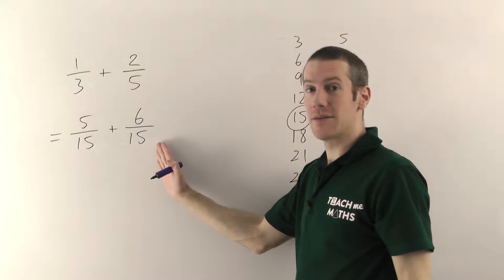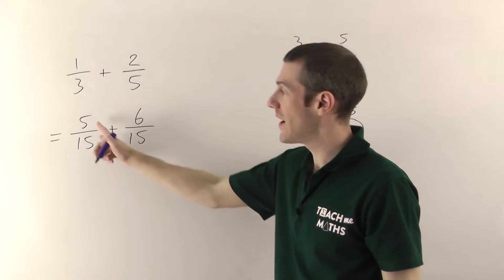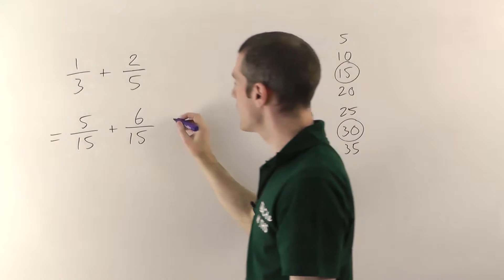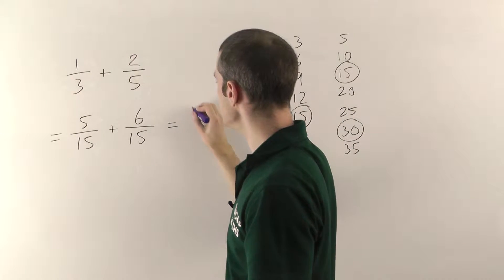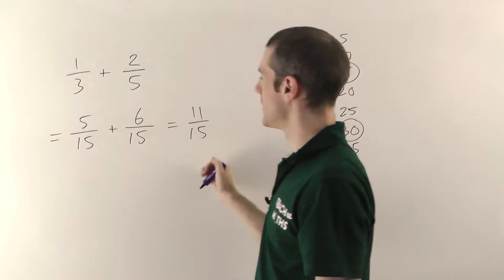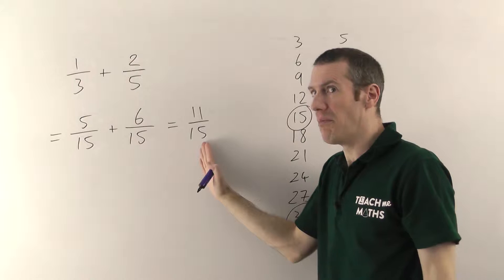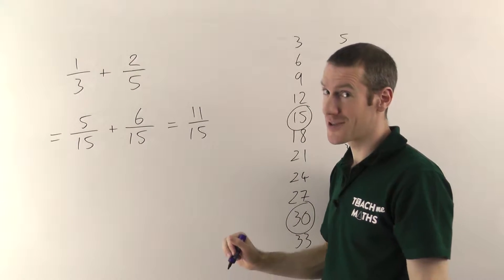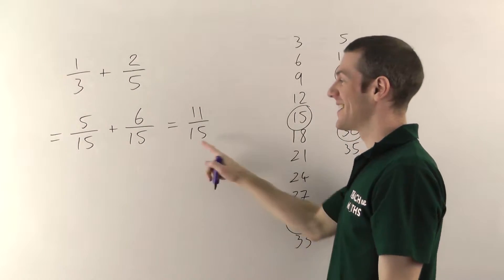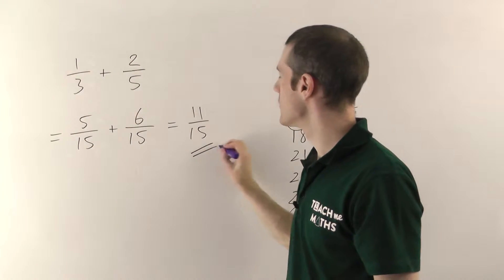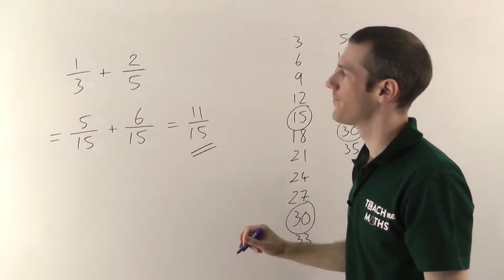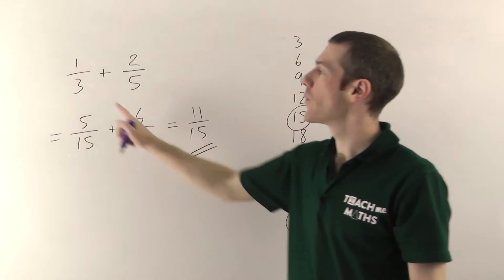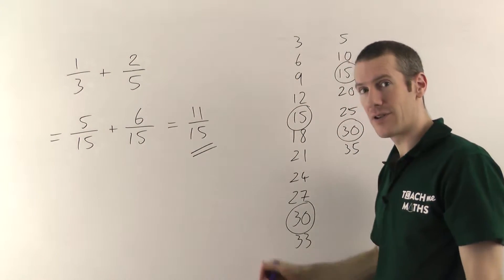Now I can add them. I'm working in fifteenths — I've got 5 of them plus 6 of them, so altogether I've got 11 fifteenths. Always check if it cancels — you've always got to do that in maths. This doesn't cancel, so 11 fifteenths is your final answer. That's how you add and subtract fractions when the number on the bottom is different.